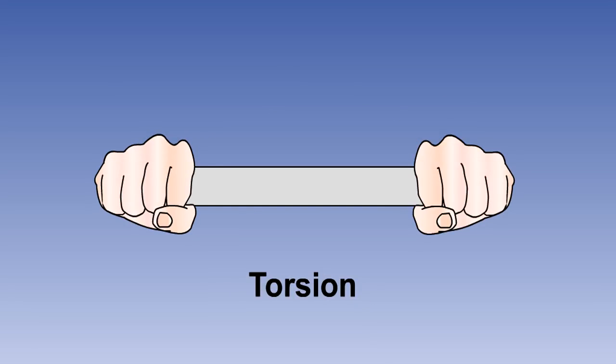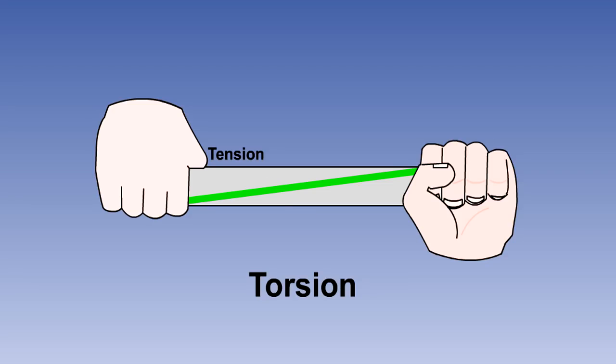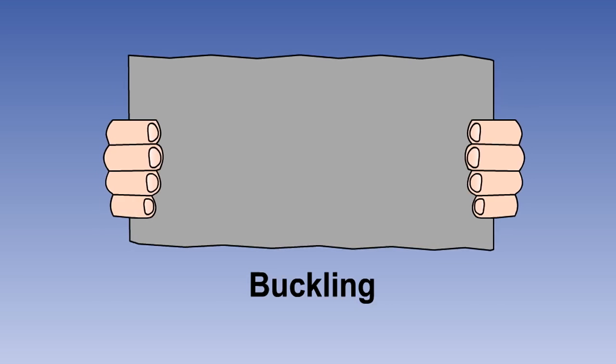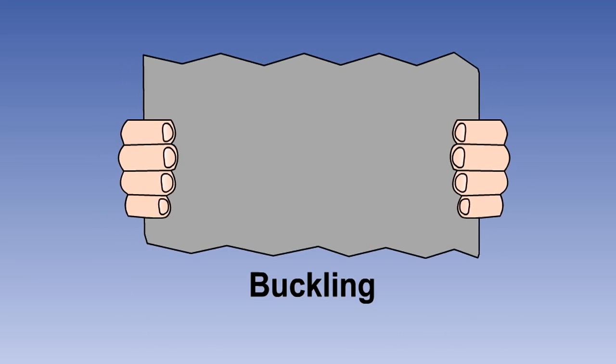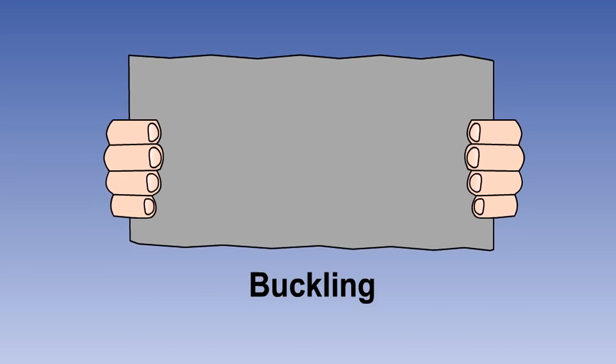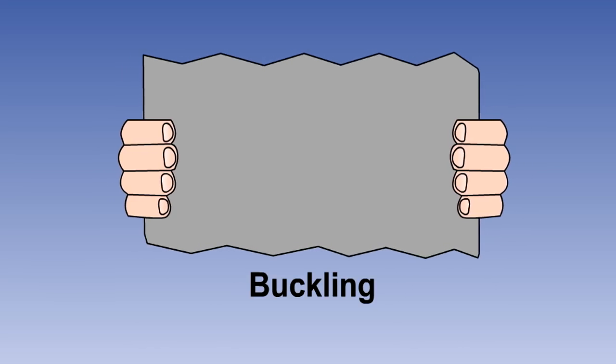Torsion or twisting forces produce tension at their outer edge, compression in the centre and shear forces across the structure. Buckling occurs to thin sheet materials when they are subjected to end loads and to ties if subjected to compressive forces.